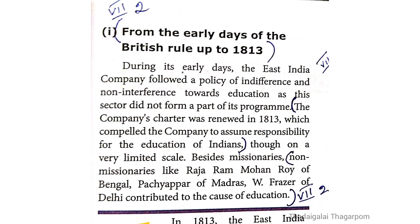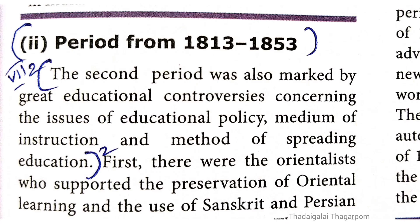First period — from the early days of British rule up to 1813: The company's charter was renewed in 1813. This period covers the education of Indians. Reformers like Raja Ram Mohan Roy of Bengal contributed to the cause of education. Second period — 1813 to 1853: The second period was also marked by significant developments in education.